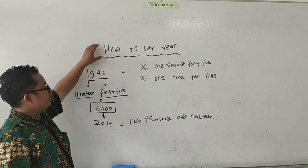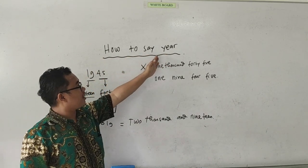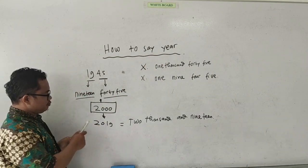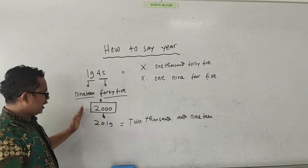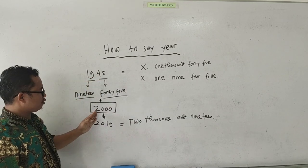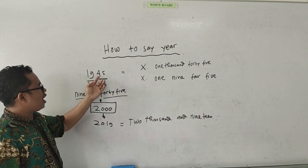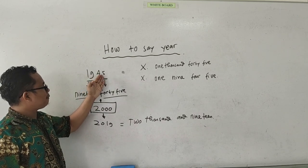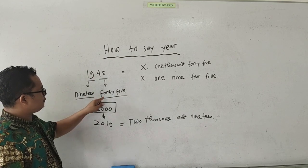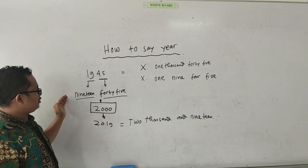Okay, alright. Let's continue. Sekarang kita belajar how to say year, bagaimana kita menyatakan tahun atau mengatakan tahun dalam bahasa Inggris. Perhatikan di sini, jika di bawah tahun 2000, contohnya adalah 1945. Jadi di bawah tahun 2000, maka polanya adalah kita bagi dua. Maka kita sebutkan: 1945 menjadi 'nineteen forty-five'.